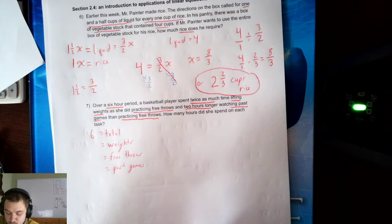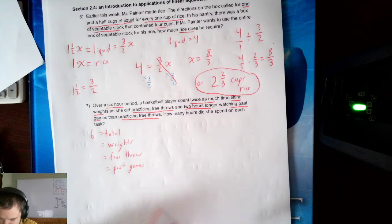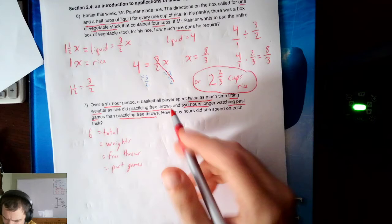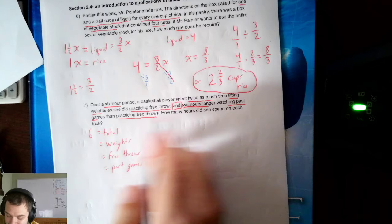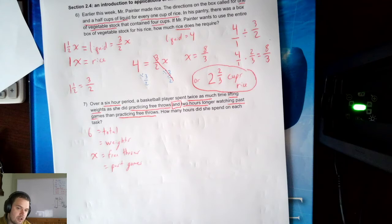I have 3 unknowns. Just like with the board example, just like with the wooden project example, I want to make sure I'm using the unknown that is referenced twice as my variable. Spent twice as much time lifting weights as practicing free throws, and 2 hours longer watching past games than practicing free throws. Free throws showed up twice, so free throws will be my variable. Maybe I choose X, or maybe you choose T for throw, or maybe F for free.